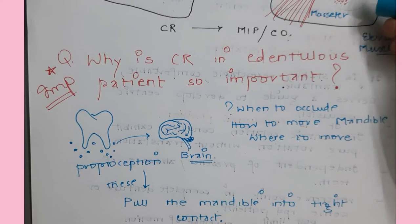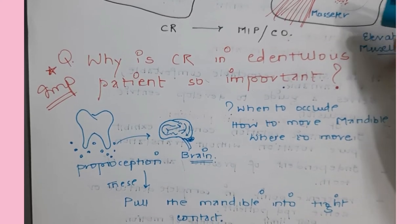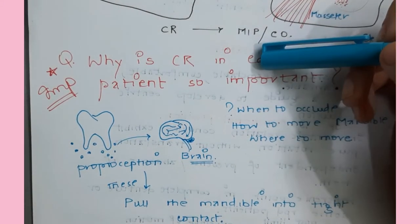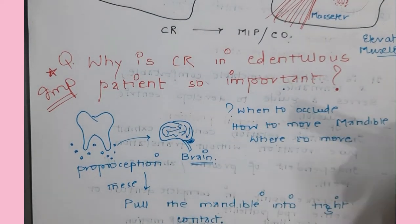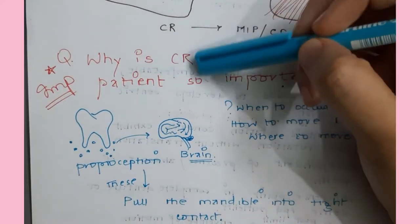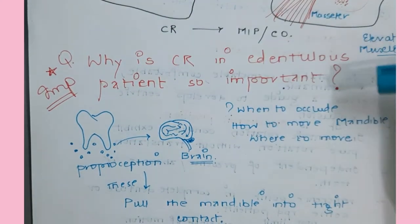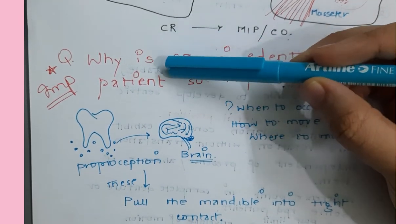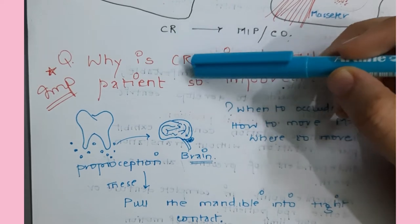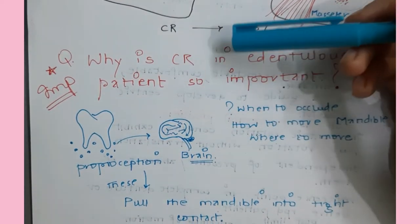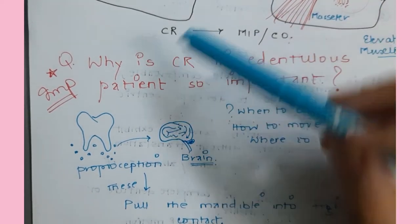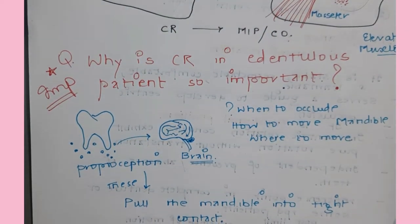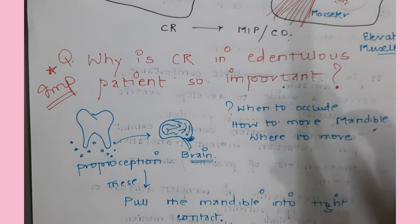Whenever teeth are present, we talk about maximum intercuspation - the best fit of teeth. In edentulous patients, teeth are not present, so there is no chance of maximum intercuspation. We rely on centric relation as a guide in edentulous patients - we record it, mount the cast in centric relation on the articulator, and then set teeth in maximum intercuspation. In centric relation, with no proprioception, only muscles guide us.